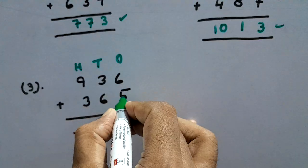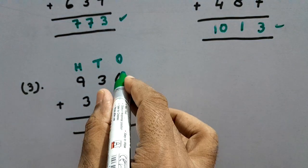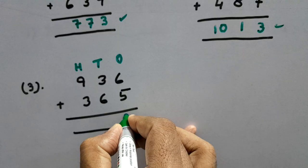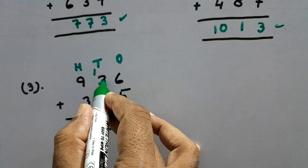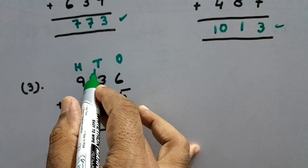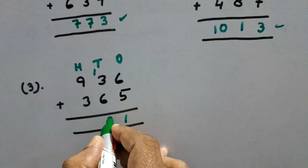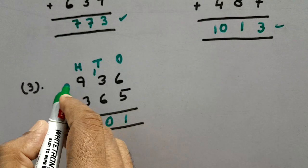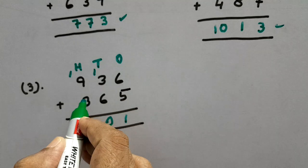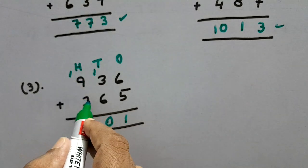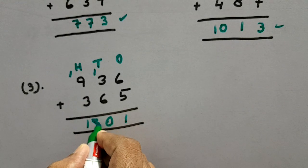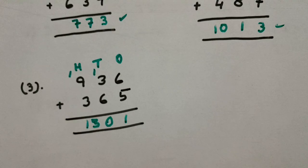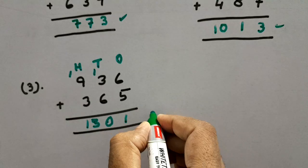So here 5 plus 6 equals 11. We'll write 1 here and carry 1 in the tens column. Now 3 plus 6 plus 1 carried — and carry into the hundreds column. Now 9 plus 3 is 12, plus 1 carried is 13. So we will write 13 in the hundreds place. So 1301 is the answer of this addition.